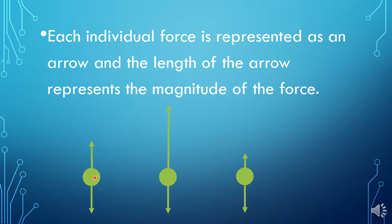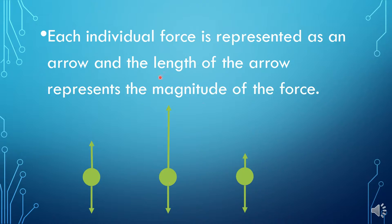It might be moving but it wouldn't be accelerating because the sum of this upward force and this downward force would be zero — they have the same magnitude but point in opposite directions. In this second free body diagram, I have a much bigger upwards force than downwards force, so this object would be accelerating upwards. Sometimes I don't know the exact magnitude of the forces, so I just use free body diagrams to represent relative magnitude. If I know this object is accelerating upwards, I want to make sure I draw that upwards arrow bigger, even if I don't know how much bigger it is.